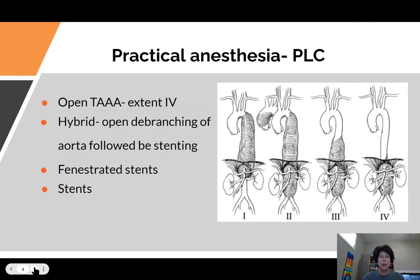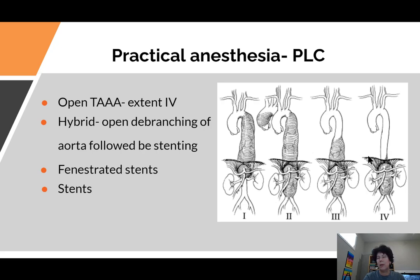So practically, what kind of cases do we do at the PLC? The biggest cases we do are the open extant force — so these would be thoracic aneurysms. Anything bigger than that will go to Foothills, and you'll see that in the cardiac rotation. These patients do go into the chest, and it's a pretty big open case. We'll talk about some of the considerations for that later.